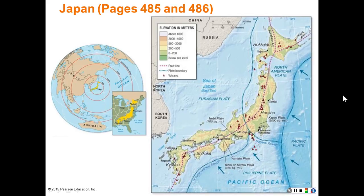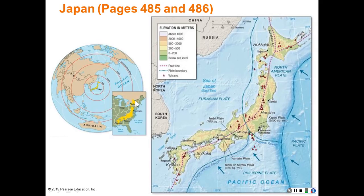These maps of Japan are on pages 485 and 486 of your text. The map on the left shows a locational map of Japan on the globe. We see Japan positioned in latitude across the United States, ranging from the south Gulf of Mexico into New England. It's about the size of California.